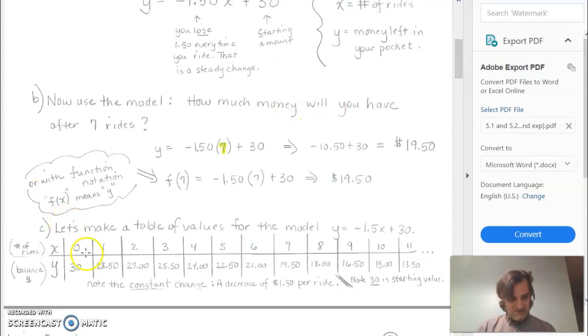Here's another example, just trying to make a table. So when we start, we haven't ridden, we have not been on any rides, and we have $30. After one ride, it's down to $28.50. Over here after six rides, it's $21. One thing you'll notice here as far as a linear is every time we changed, it went down $1.50. It changed by the same amount each time. And that's how you tell you have a linear function.